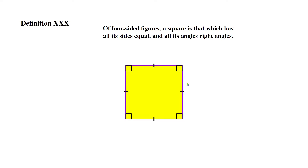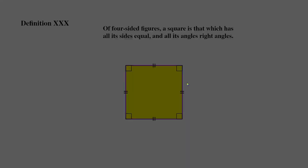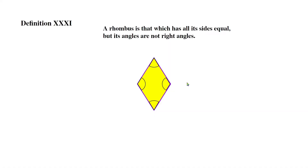Definition 30: of four sided figures, a square is that which has all its sides equal and all its angles right angles. This is basically explaining what a square is — a figure that has four equal sides and four equal right angles.